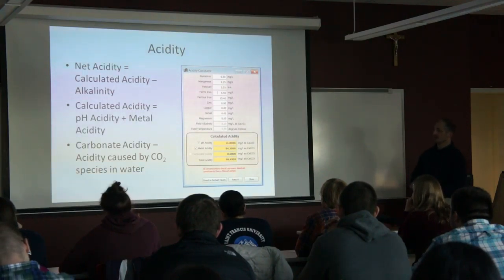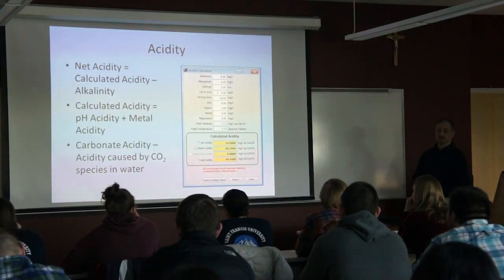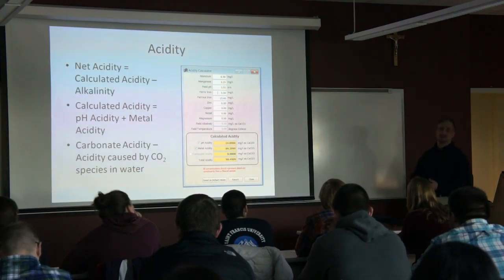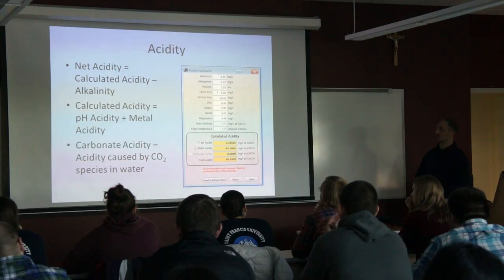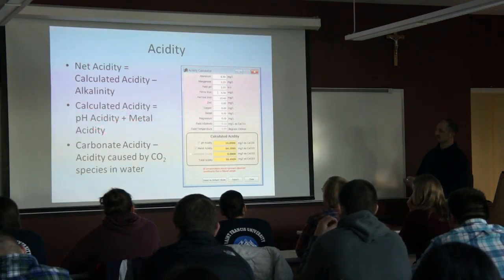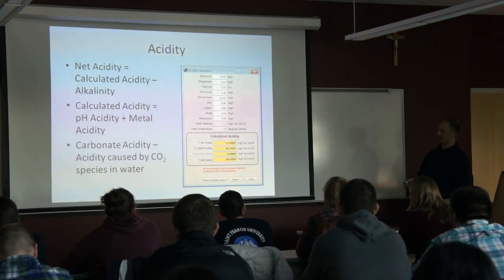There's a synonymous term called hot acidity, which you can get from a laboratory — you take a sample to a lab and they'll test it for hot acidity, which ends up being pretty synonymous to net acidity. But there's also a way to calculate it, based on knowing a few things. Calculated acidity equals pH acidity plus metal acidity. This is a calculator in a software called AMBtreat, which I'll get into in a little bit.